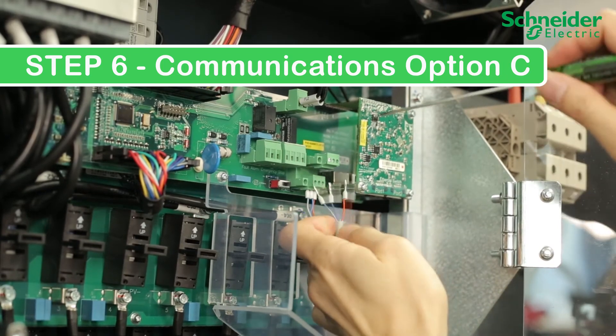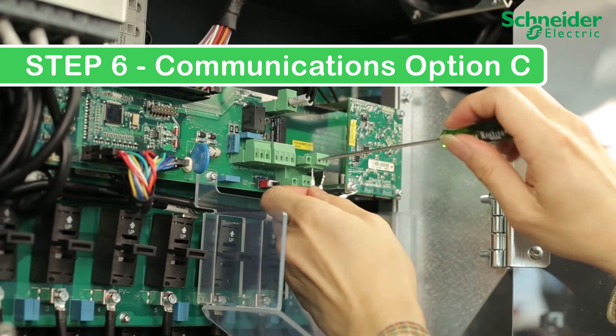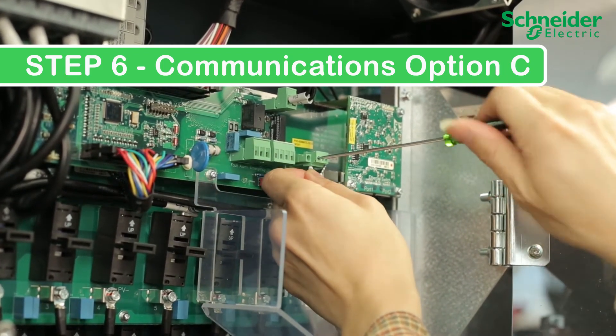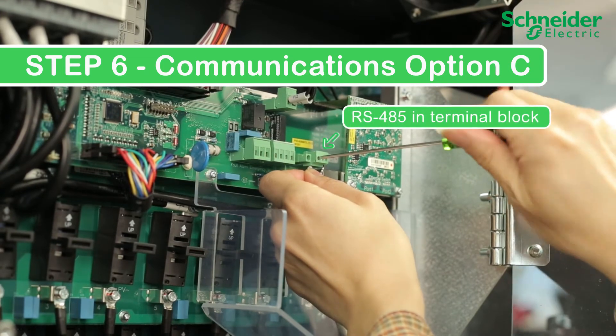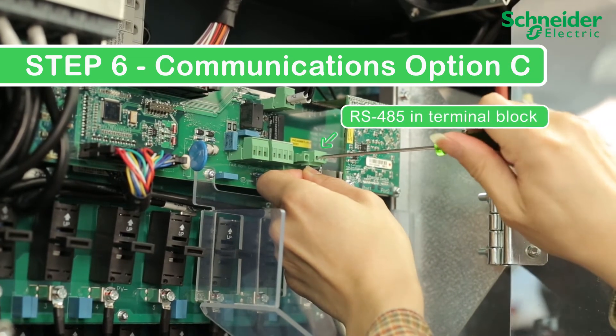For mid-string CL60s in a daisy chain, connect the second cable to the upper terminal block or the in terminal block and ensure the terminator is set to off.